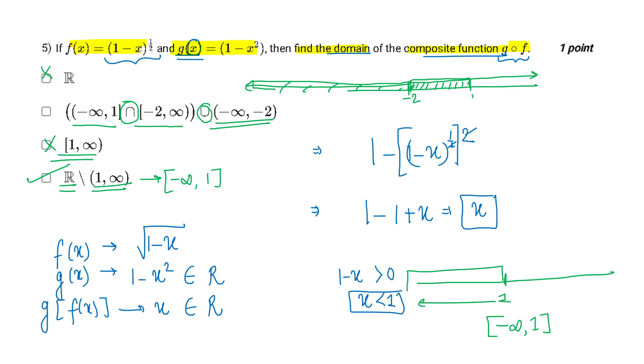Isko jab aap dekhoonge, that is nothing but minus infinity to 1. And that is what our domain lies in.